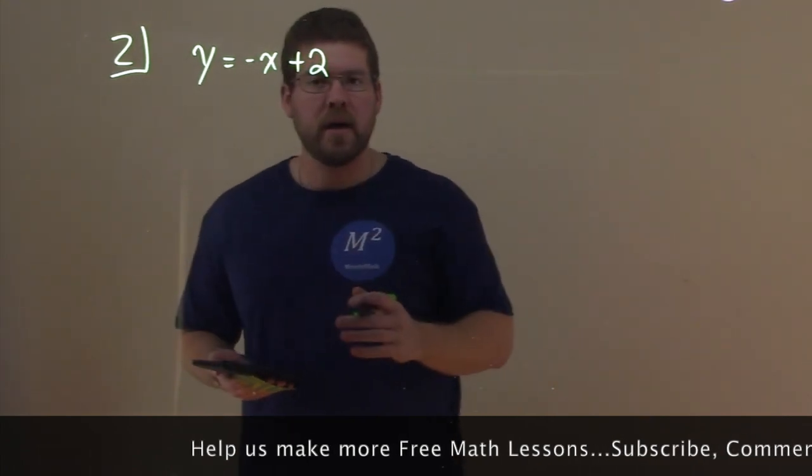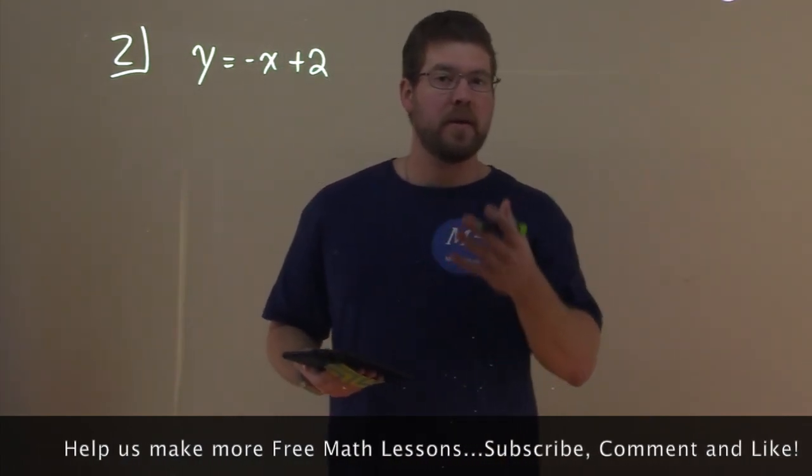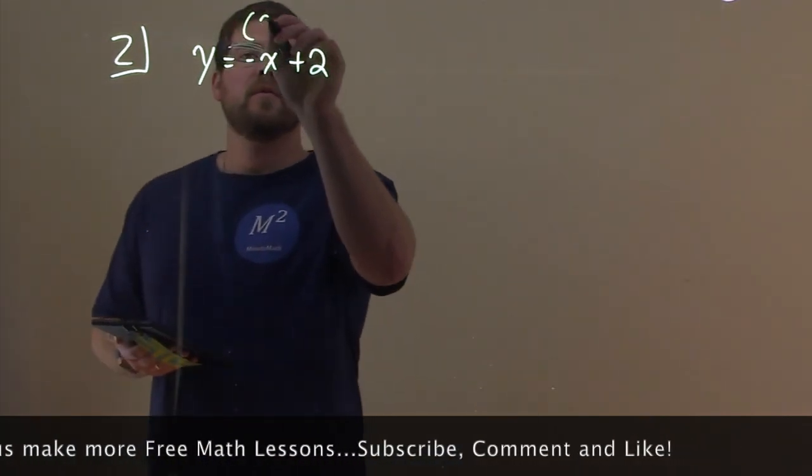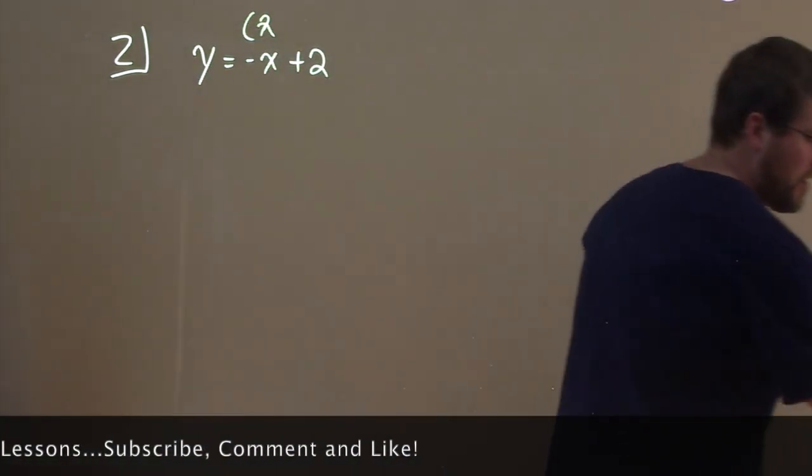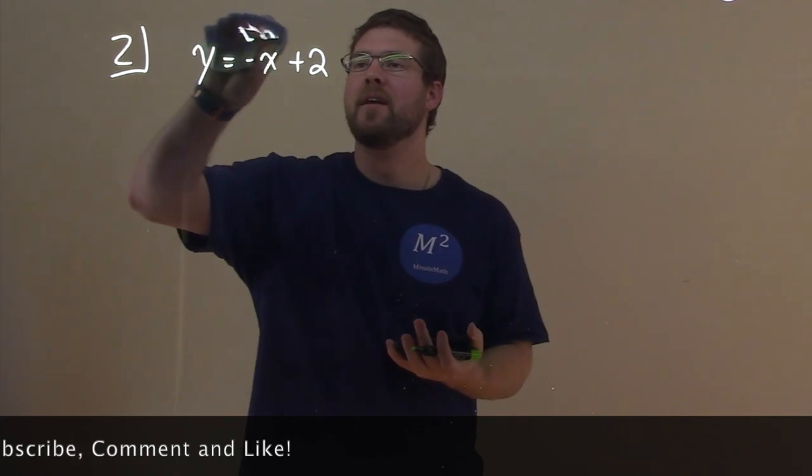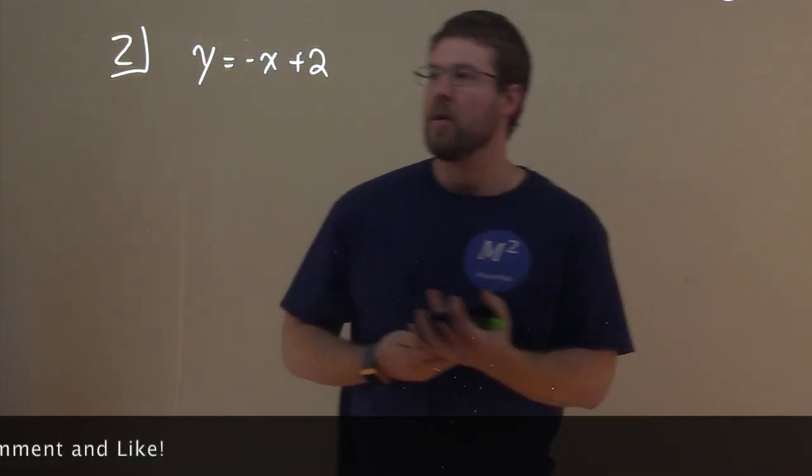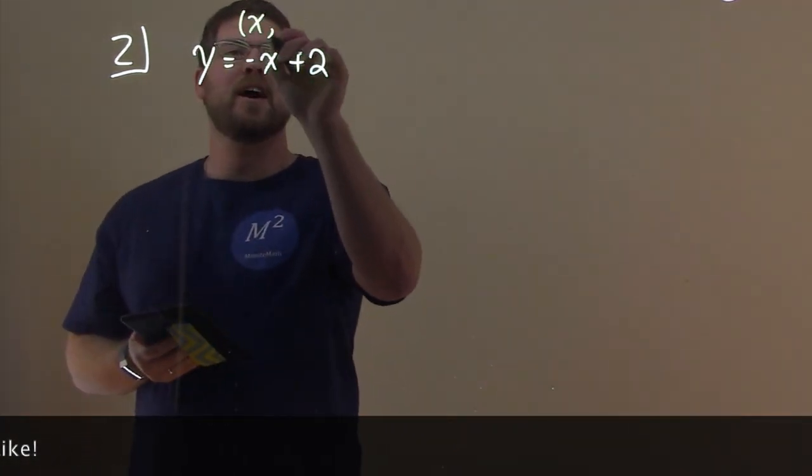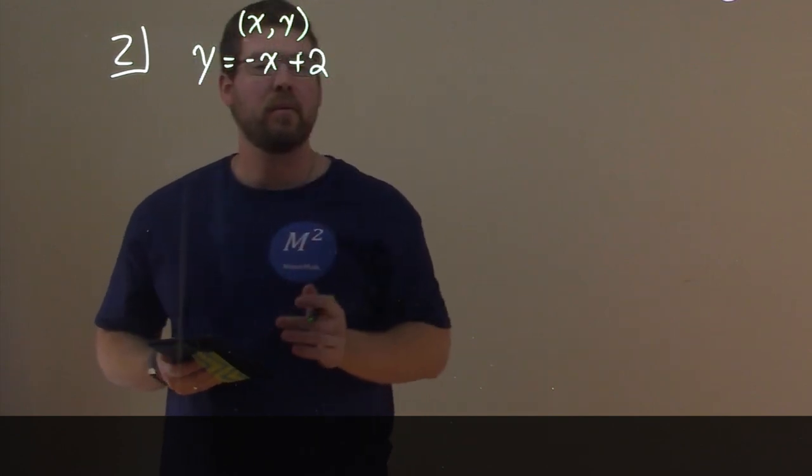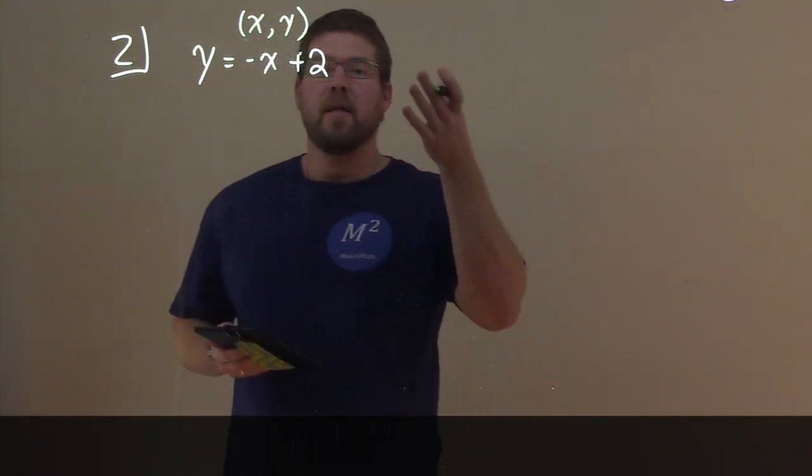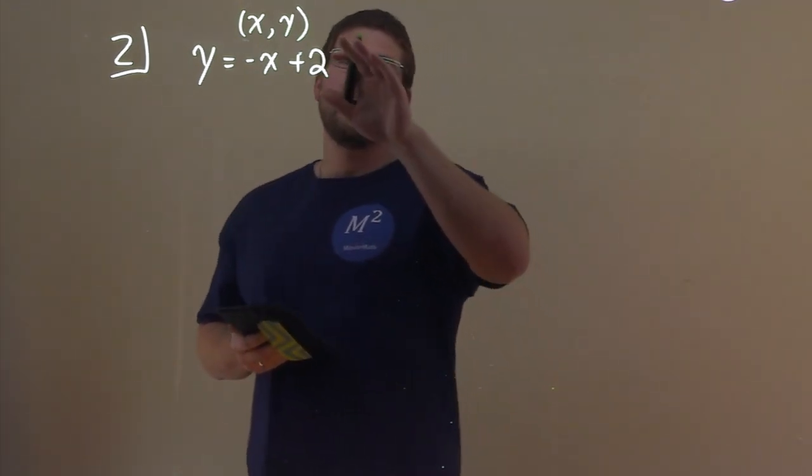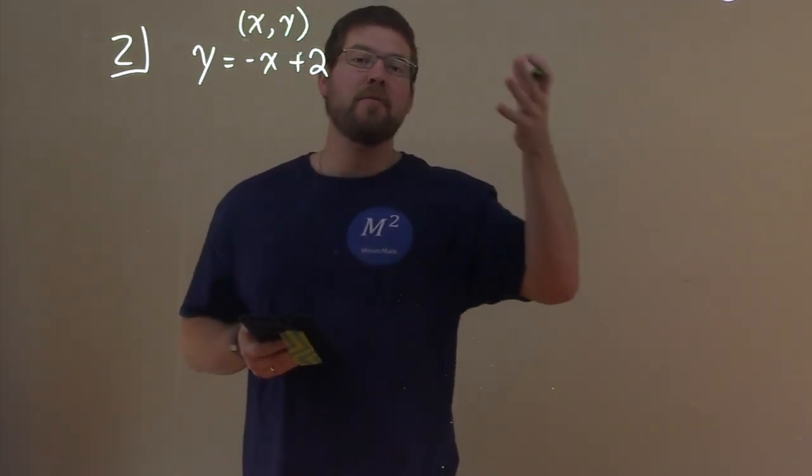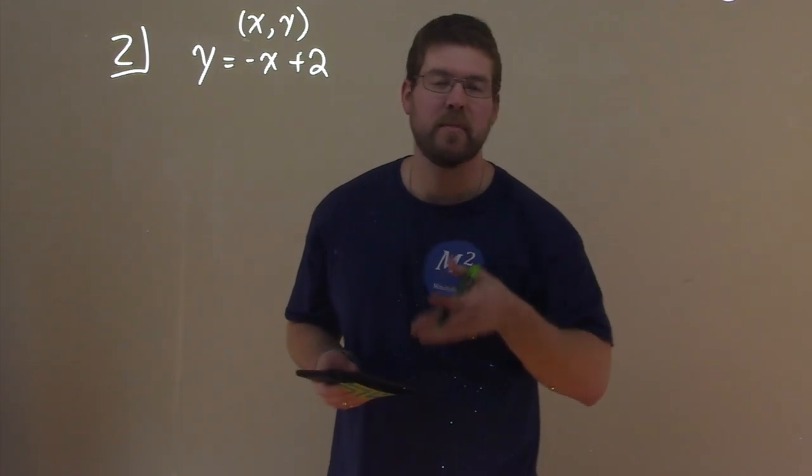Notice we have an x and a y, just like any coordinate points. x comma y, we've seen that before. So we have x comma y as a point, and a line is made up of infinitely many points. What we're going to do is find points, graph those points, and then connect the dots to make our line.